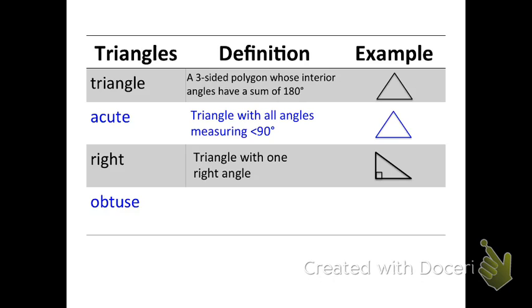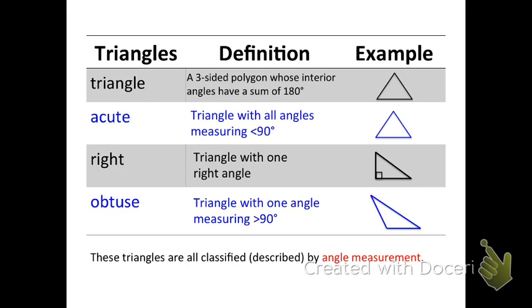And the last triangle that we have is an obtuse triangle. It's a triangle with one angle measuring greater than 90 degrees. And that would be a picture of that, an example of an obtuse triangle. Okay? Now we're going to classify them. These three triangles are all classified or described by angle measurement. So your acute, your right, and your obtuse triangles are all classified by angle measurement.